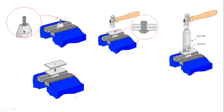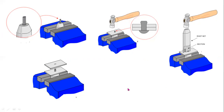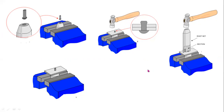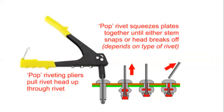These are the dice used in the riveting process. A hammer is used to apply the blows. This is another method for riveting.